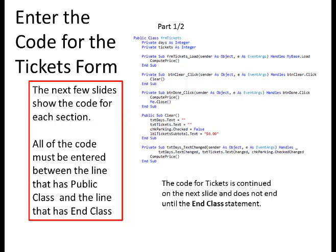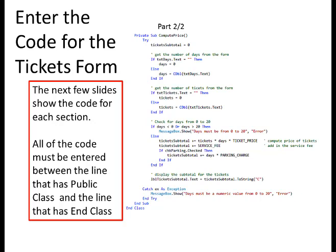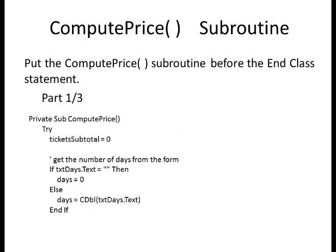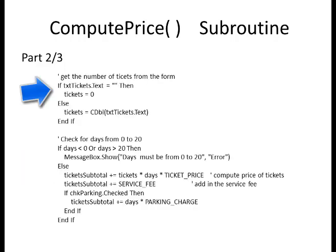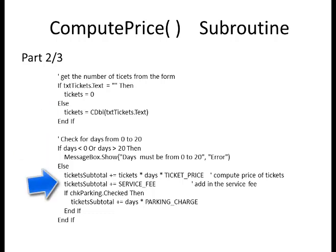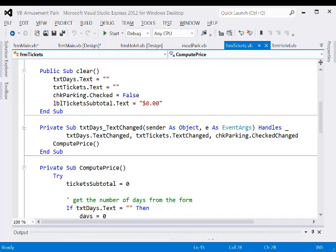Inside compute price, everything is inside a try-catch block. Inside the try, set ticket subtotal to zero, then get the number of days from the text box and the number of tickets from its text box. Verify that days is between 0 and 20. Compute the price of the tickets: tickets times the ticket price ($95), then add the service fee. If parking is checked, add the parking charge. Store the answer in the label at the bottom.